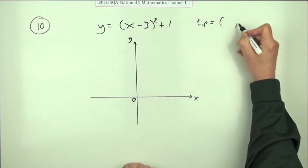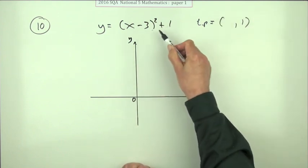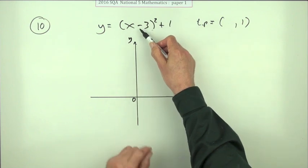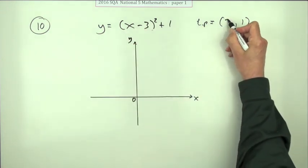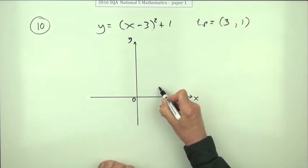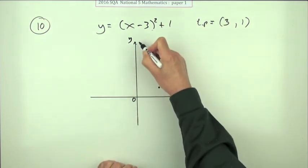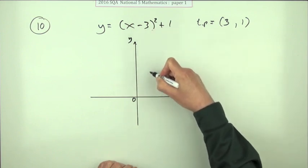So you know the turning point's at 1, and it will get down to 1 when the bracket is 0. And the bracket will be 0 when x is 3, to knock out that take away 3. So I'm going to have a turning point 3 along, 1 up. So the parabola is coming down here.